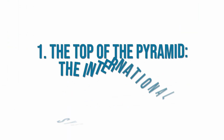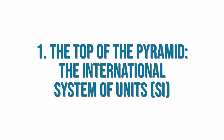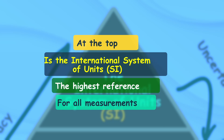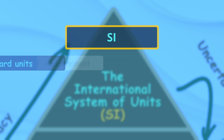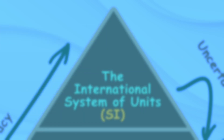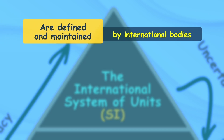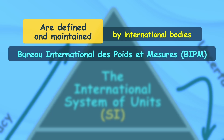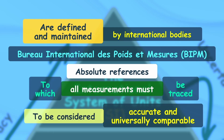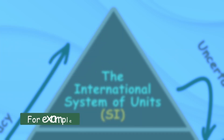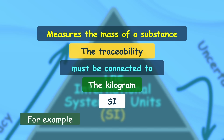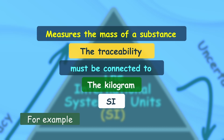At the top of the pyramid is the International System of Units, which is the highest reference for all measurements. It provides standard units such as the meter for length, the kilogram for mass, and the second for time. These units are defined and maintained by international bodies such as the Bureau International des Poids et Mesures (BIPM) and are the absolute references to which all measurements must be traced to be considered accurate and universally comparable.